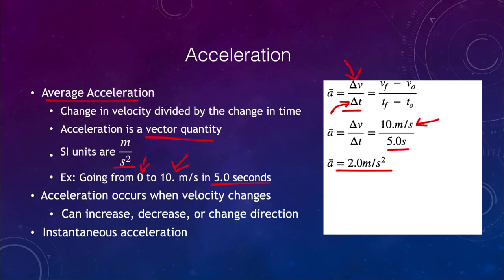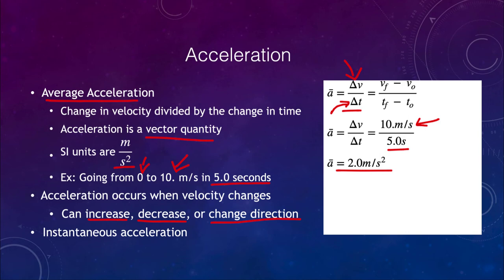We want to remember that acceleration occurs anytime a velocity changes. Velocities can change for a number of reasons: the velocity can increase — what we often call acceleration — it can decrease, which we call deceleration, or it can change direction. So an acceleration can occur when you change direction as well. For example, something in a circular orbit would also be accelerating even if its speed remains the same, because its direction is changing.